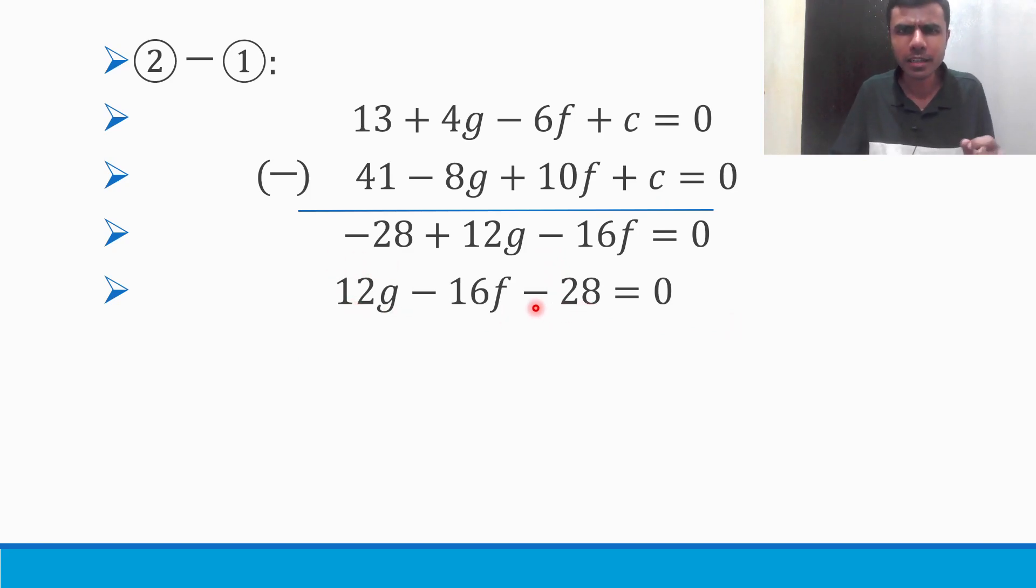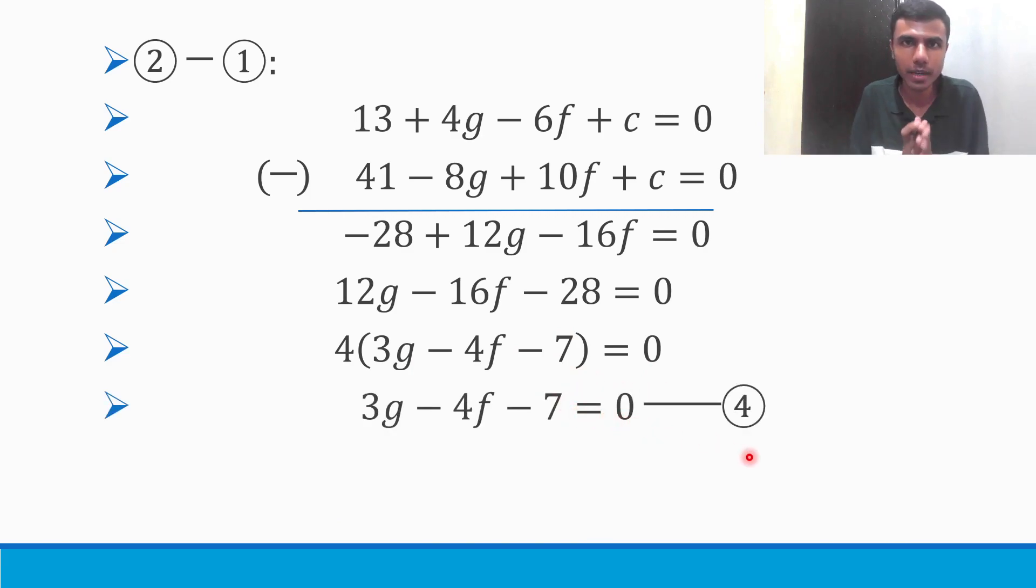Now if you see this, the numbers are little big. What can we do? We can take 4 common. If we take 4 common, I'll get 4 × 3g. Because 4 threes are 12 and 4 fours are 16. That's why I have 4f, I mean -4f here. And then minus is there. 4 sevens are 28. So I took 4 common. So 7 is left out here. Send this 4 to the RHS. 0 by 4 is 0. 3g - 4f - 7 = 0. That's my 4th equation.